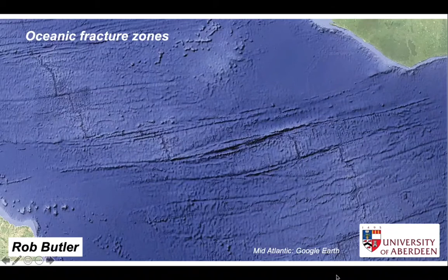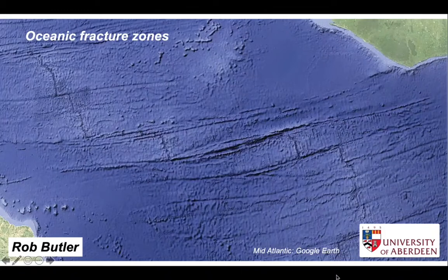If you look at bathymetric maps of the world's oceans, you see textures like this. The seabed is cross cut by fracture zones. What are these features?